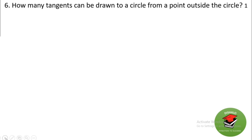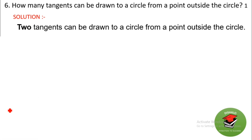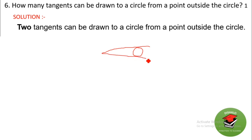Next question: how many tangents can be drawn to a circle from a point outside the circle? The answer is 2. If I have a point outside a circle and draw tangents from it, I can draw exactly 2 tangents to the circle.